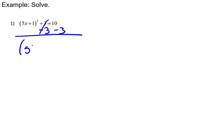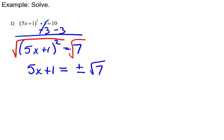So in this case we'll first isolate the squared term by subtracting 3 from both sides, that'll give us (5x+1)² = 7. Then we'll unsquare by taking the square root, of course we have to do it to the entire of both sides. This will give us 5x+1 on the left, and then ±√7 on the right.